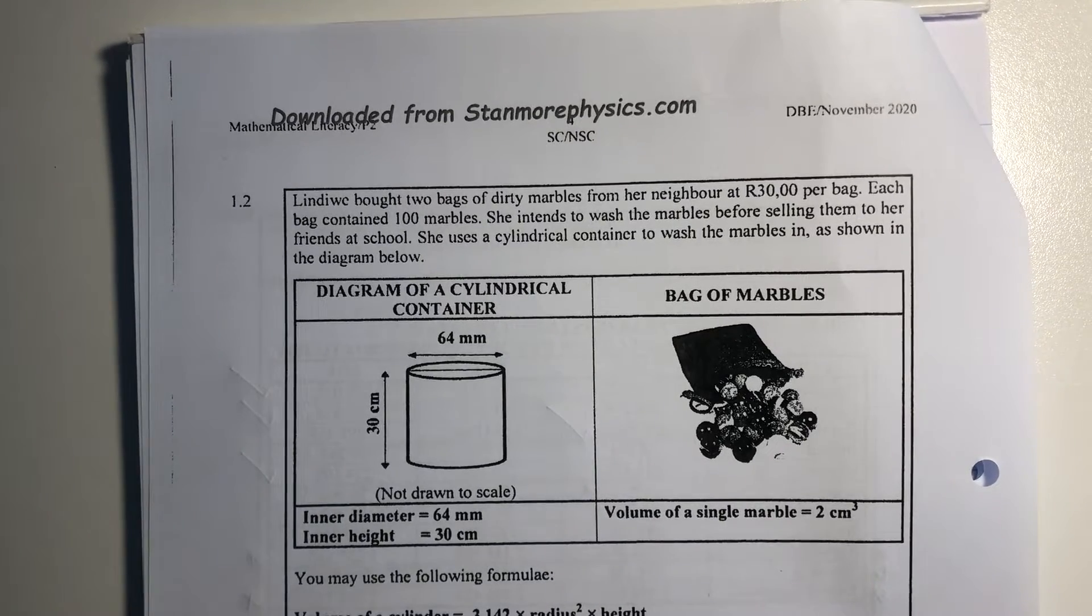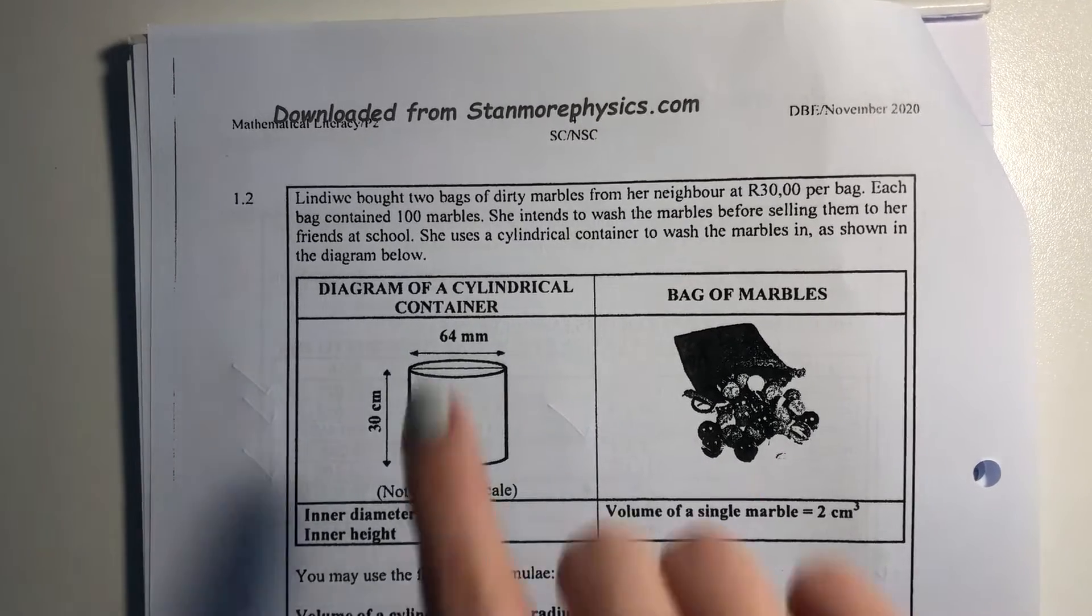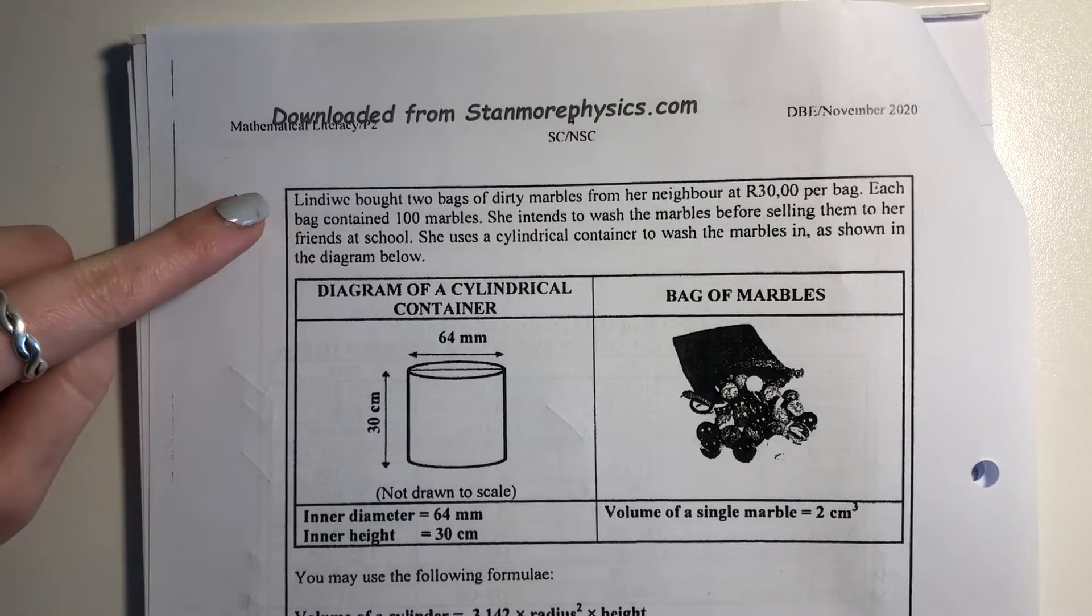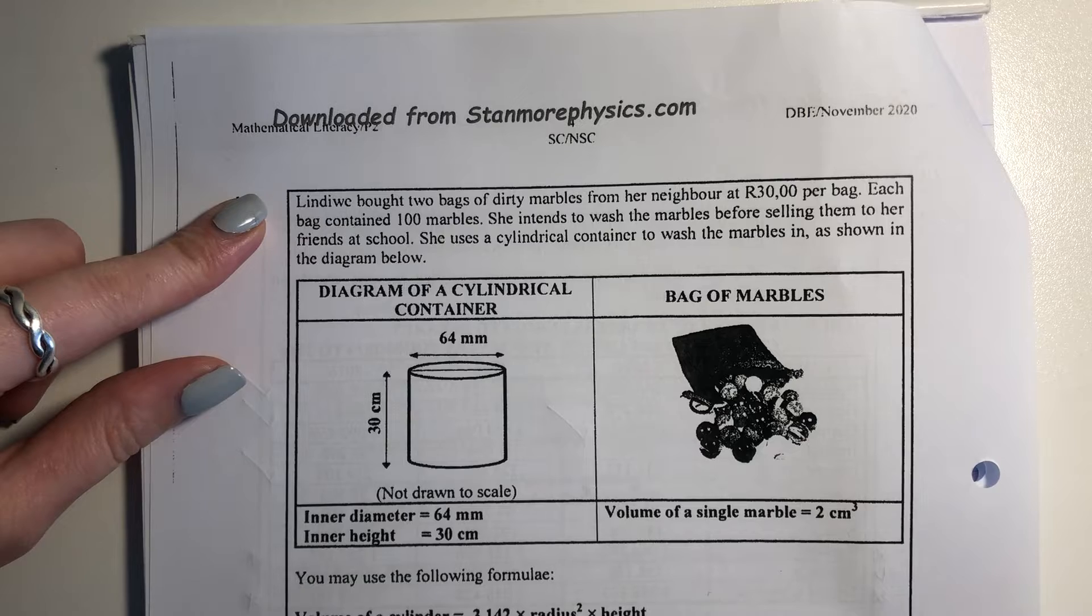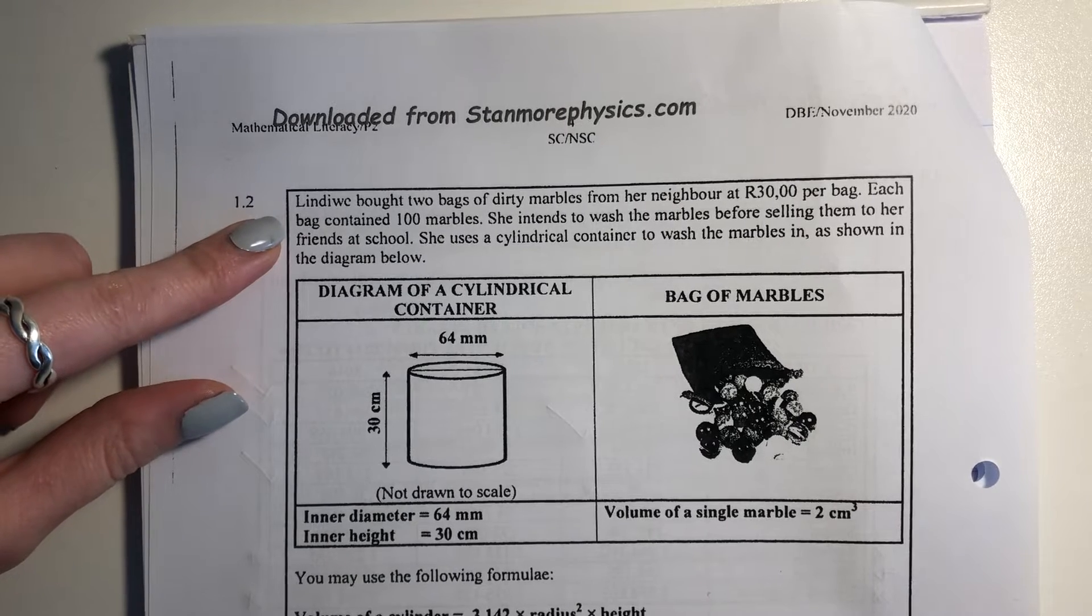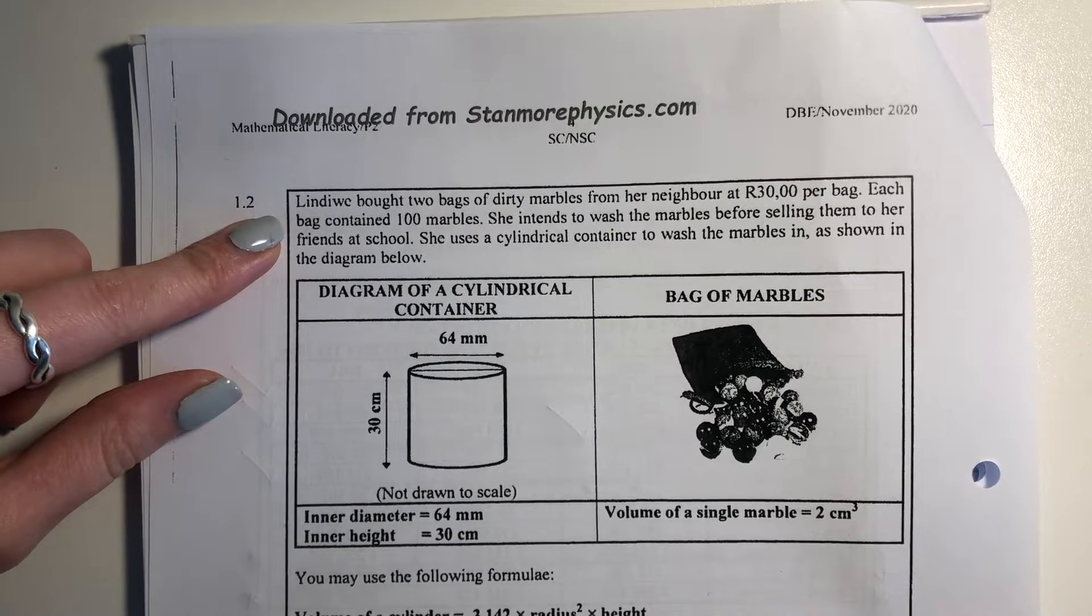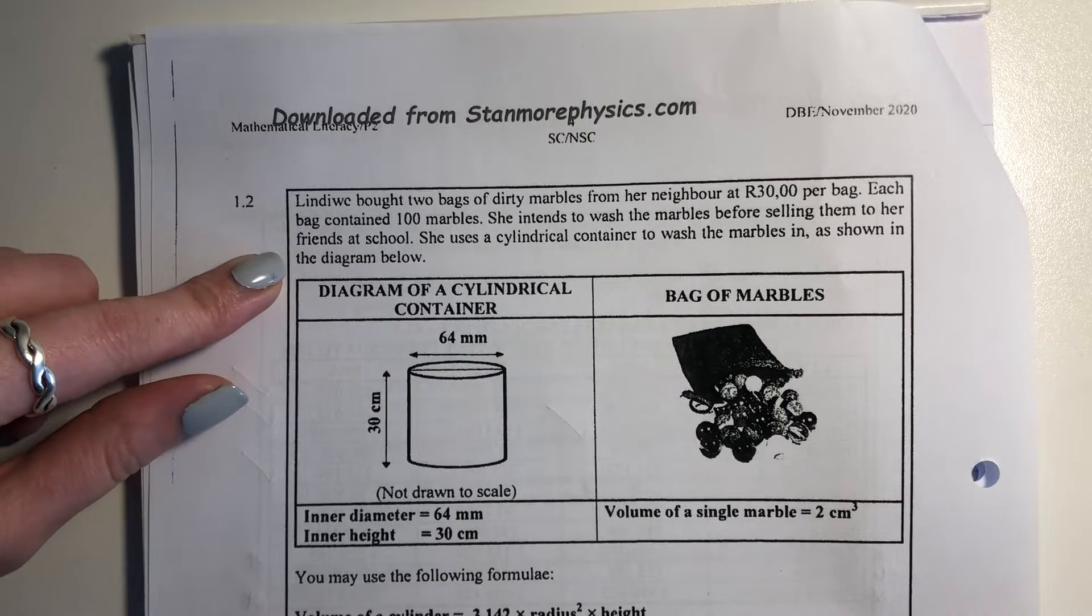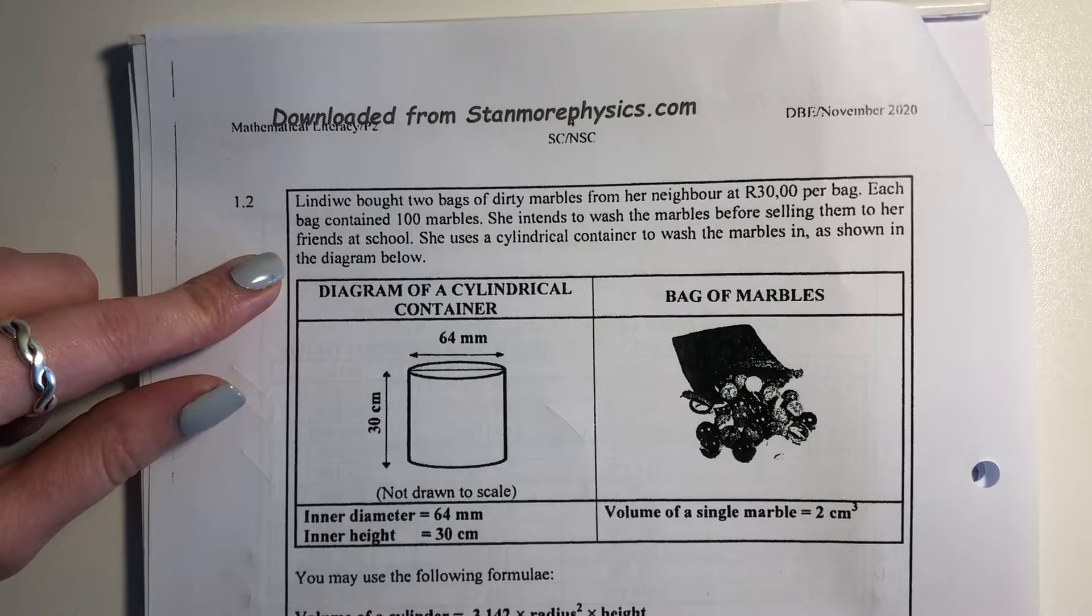Okay, let's move on to our next question. So it says, Lindywe bought two bags of dirty marbles from her neighbor at 30 rand per bag. Lindywe has a variety of different hobbies. Anyways, each bag contained 100 marbles. She intends to wash the marbles before selling them to her friends at school. She uses a cylindrical container to wash the marbles in as shown in the diagram.